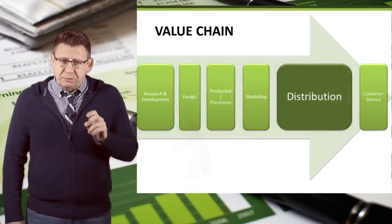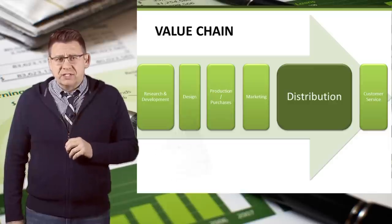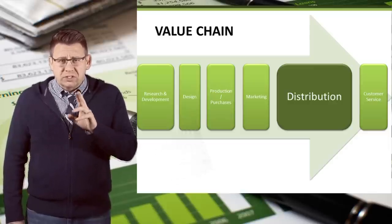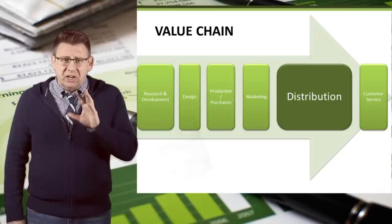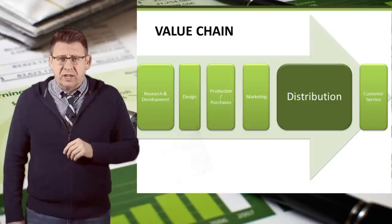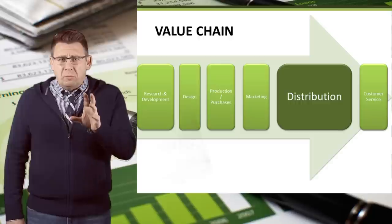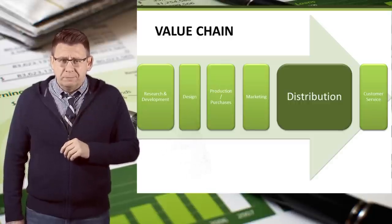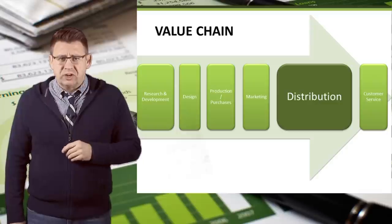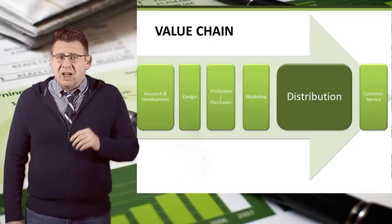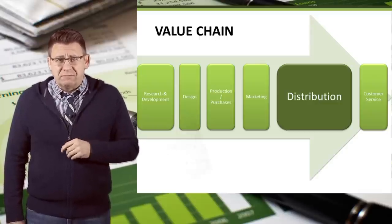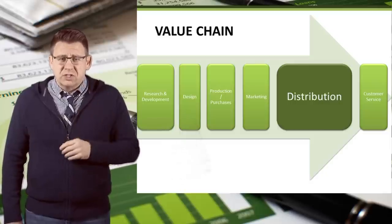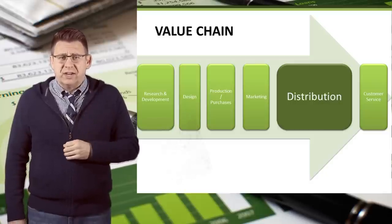Distribution is the process of delivering products to consumers. For some companies, this is an expensive and large portion of their value chain. Think about Walmart distributing goods to more than 11,000 stores worldwide. That's a massive distribution channel. But a small law firm would likely just use the post office and have very small distribution costs. Costs associated with this activity are classified here.